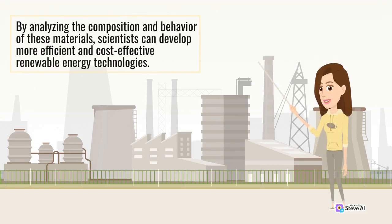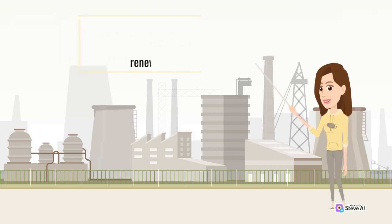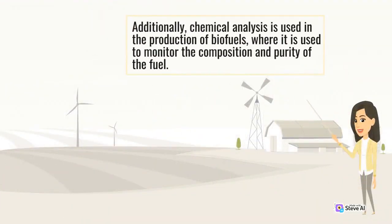By analyzing the composition and behavior of these materials, scientists can develop more efficient and cost-effective renewable energy technologies. Additionally, chemical analysis is used in the production of biofuels, where it is used to monitor the composition and purity of the fuel.